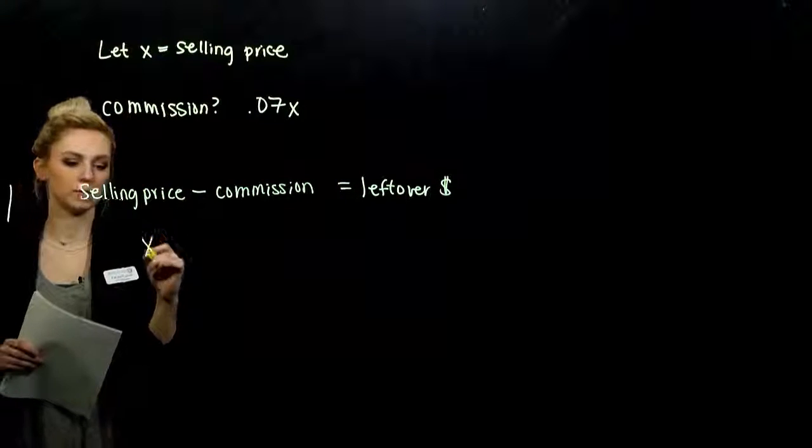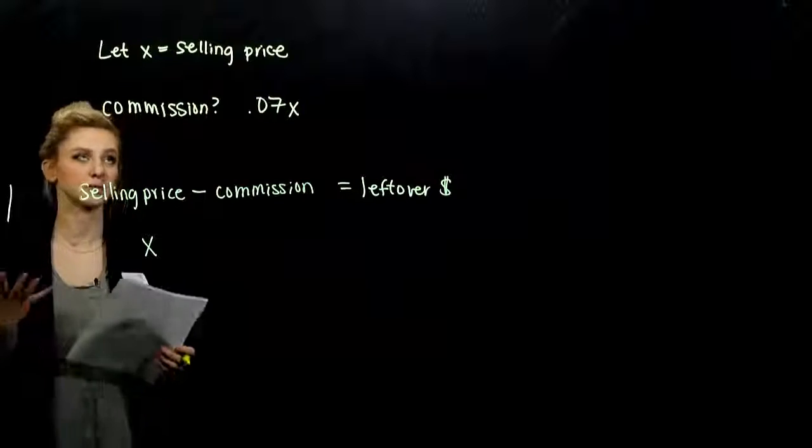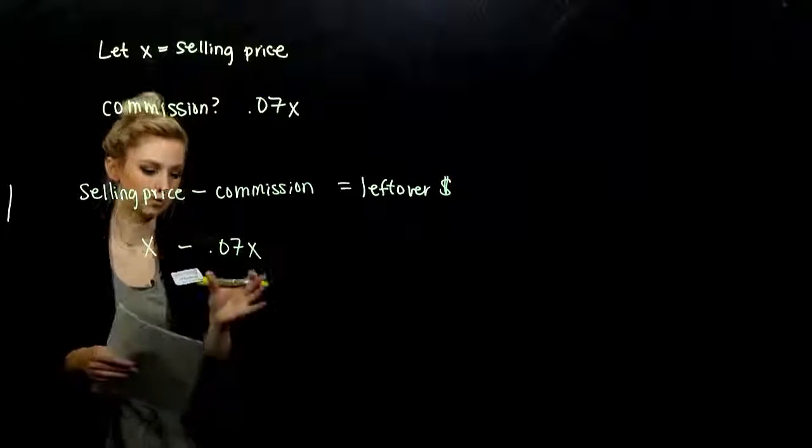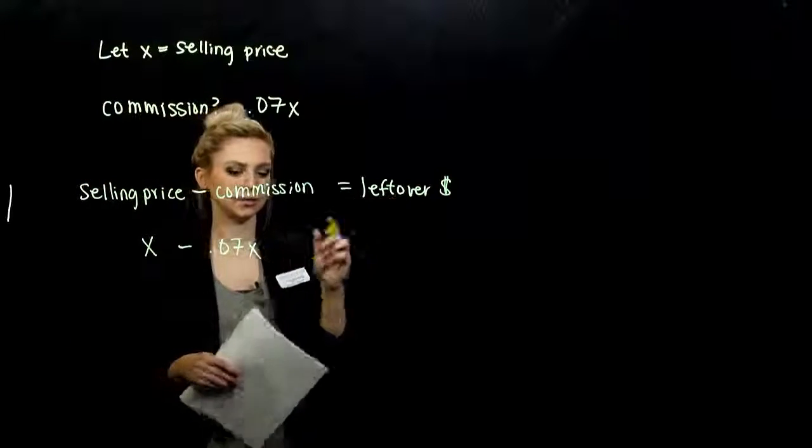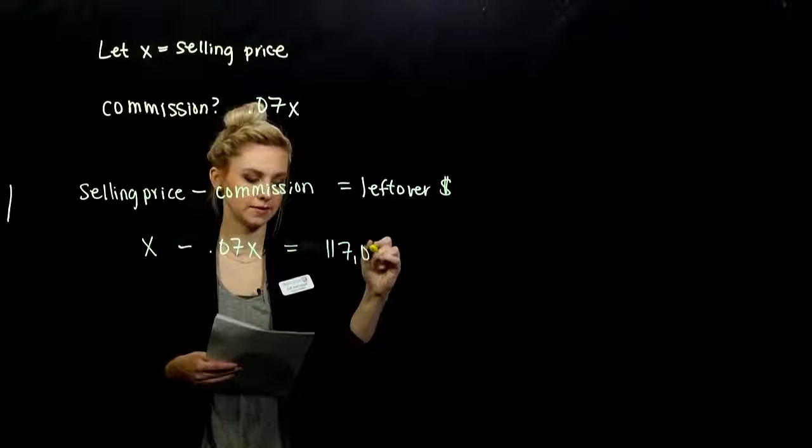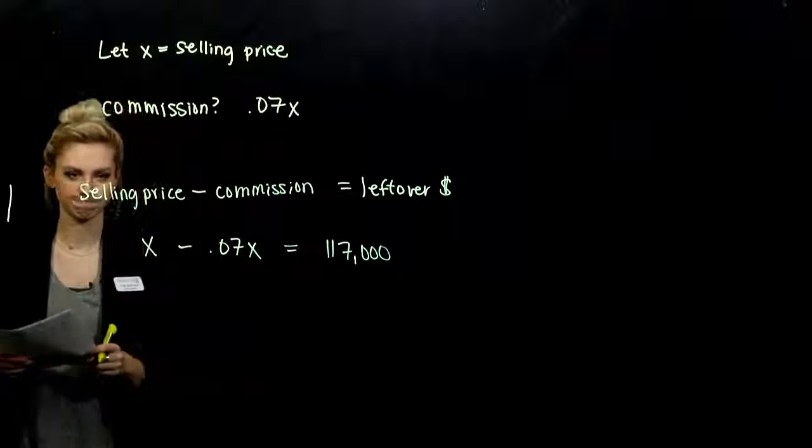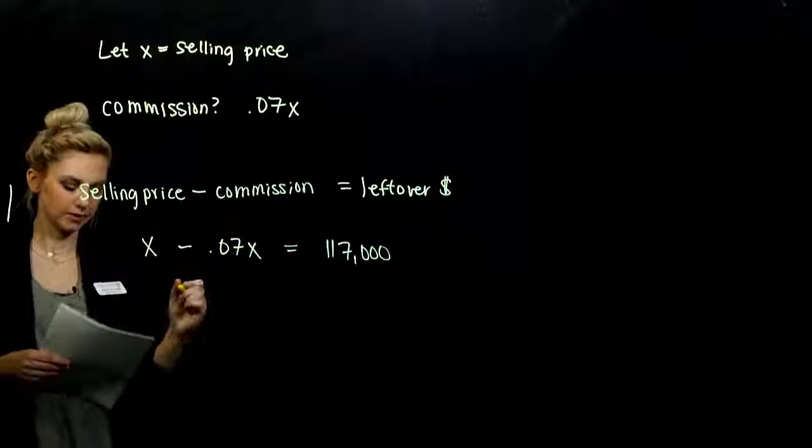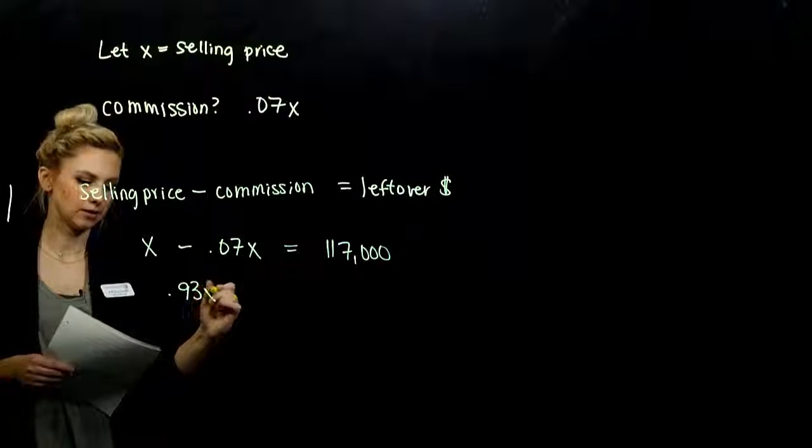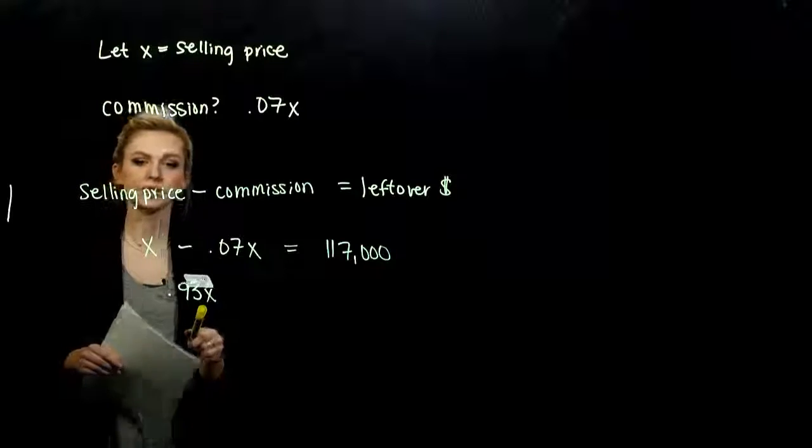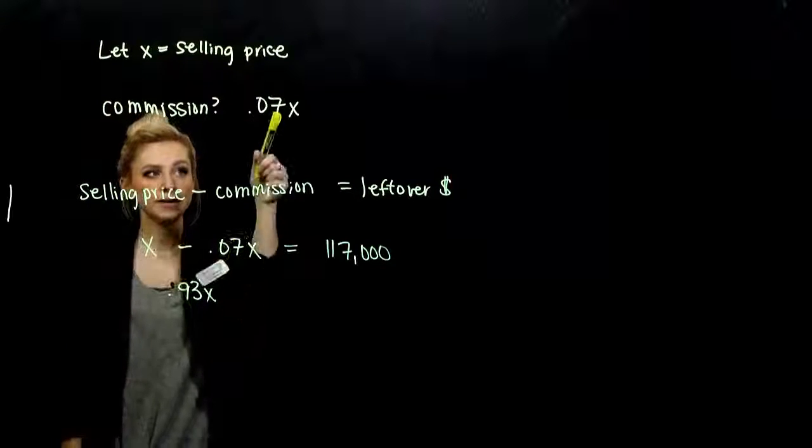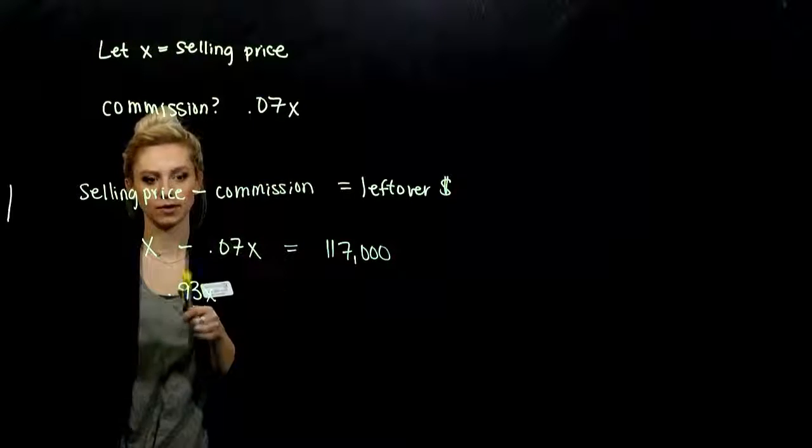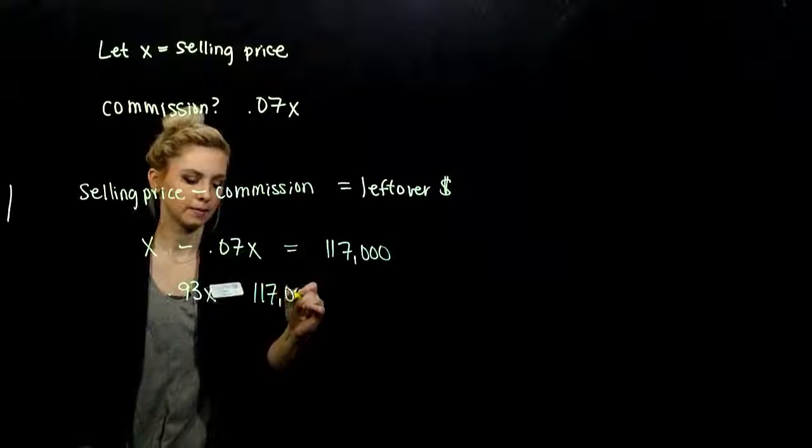Let's just plug in the values. So the selling price, it's unknown. We let it be represented by x. The commission was 0.07% of that selling price. And leftover, in the end I want to be left with $117,000. So everything is in terms of one variable again. So 1 minus 0.07, we're left with 93% of the selling price. You could look at it that way as well. If I'm paying 7% out of the 100%, then I'm left with 93%. You could have also set it up like that.